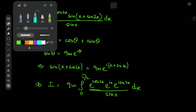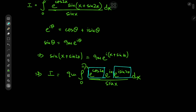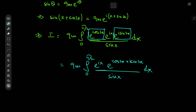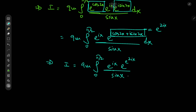Notice something very cool. We have e to the cosine 2x and we also have e to the i·sine 2x, so we should combine them. We have the imaginary part of the integral from 0 to π/2 of e to the ix times e to the (cosine 2x + i·sine 2x) divided by sine x dx. That combined term equals e to the 2ix. So the target integral is the imaginary part of the integral from 0 to π/2 of e to the ix times e to the e to the 2ix, divided by sine x, dx.